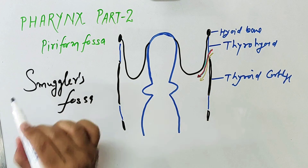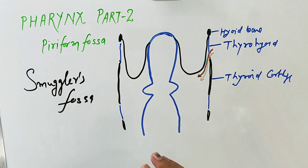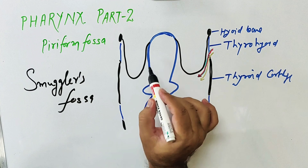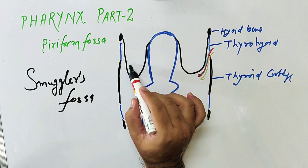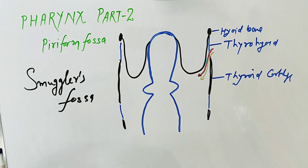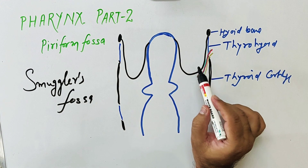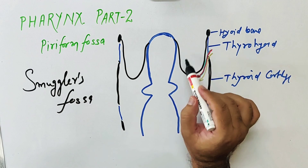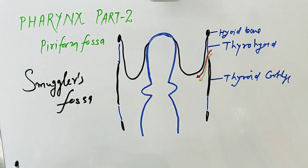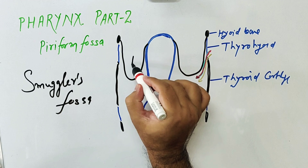This is known as the smuggler's fossa because sometimes this fossa is used by smugglers for hiding precious materials like diamonds. Smugglers push the diamond here and hide it. It is also used by quadrupeds as a lateral food channel, where food materials collect.